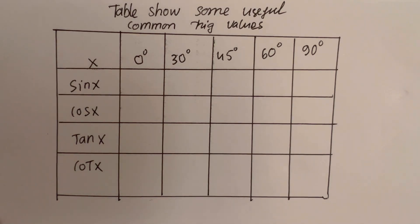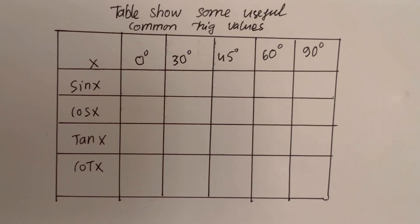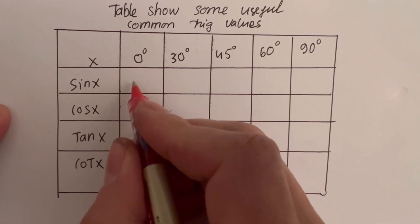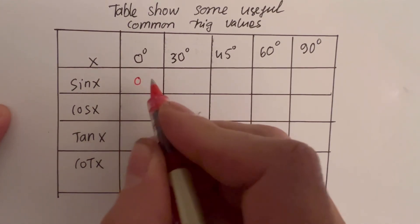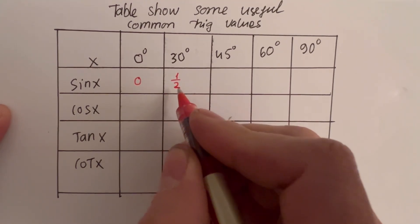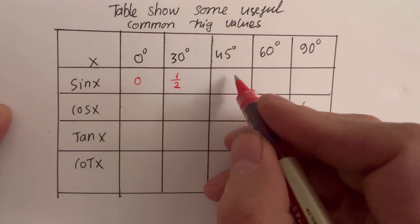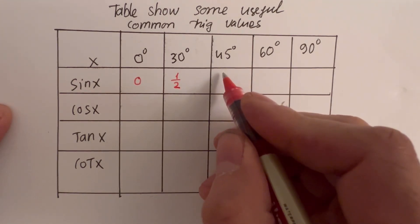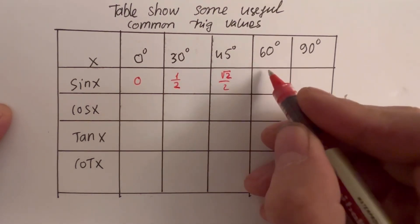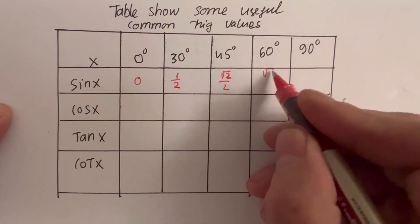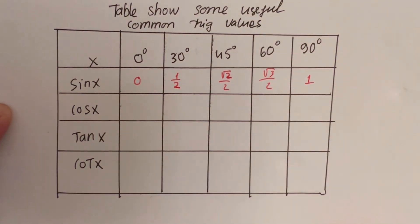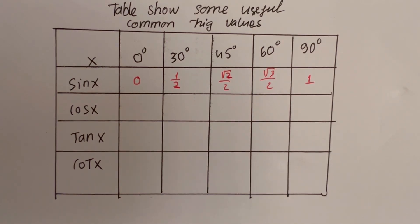When x equals 0°, sin x equals 0. At 30°, sin x equals 1/2. At 45°, sin x equals √2/2. At 60°, sin x equals √3/2. And at 90°, sin x equals 1.